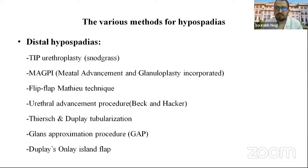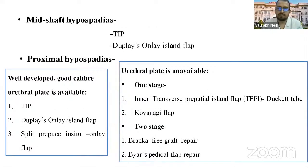Various procedures exist for hypospadias. For distal hypospadias: TIP urethroplasty, MAGPI (meatal advancement and glanuloplasty incorporated), flip-flap/Matthew technique, urethral advancement procedure, Thiersch-Duplay tubularization, glans approximation procedure, and Duplay onlay island flap. For mid-shaft hypospadias: TIP repair and Duplay onlay island flap. For proximal hypospadias with a good urethral plate: TIP repair, Duplay onlay island flap, or split prepucial in-situ flap. If the urethral plate is unavailable: one-stage procedures such as inner transverse prepucial island flap (Duckett tube) or Koyanagi flap; or two-stage repair with BRCA free graft repair or Byars pedicle flap repair.